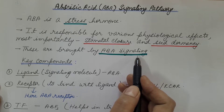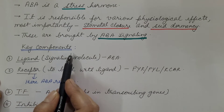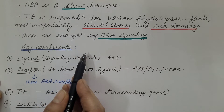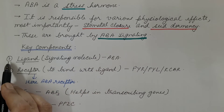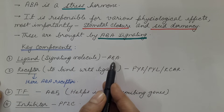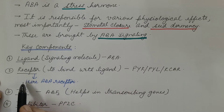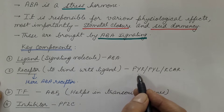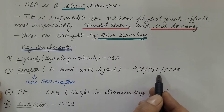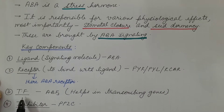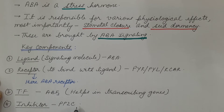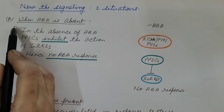We will now discuss abscisic acid signaling. Every signaling pathway has certain key components. The key components of abscisic acid signaling are: first, the ligand — the signaling molecule, which here is abscisic acid; second, the receptor that binds with the ligand, which in Arabidopsis is PYR/PYL/RCAR; third, the transcription factor ABFs, which helps in transcribing genes; and fourth, the inhibitor PP2C, which also acts as a regulator.